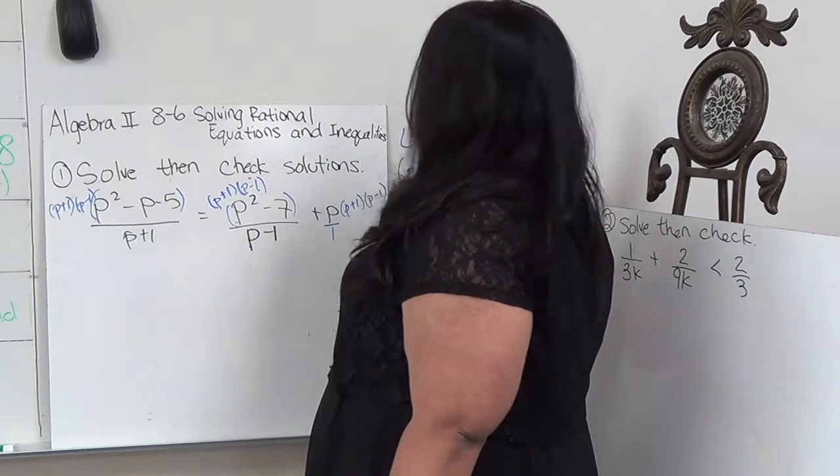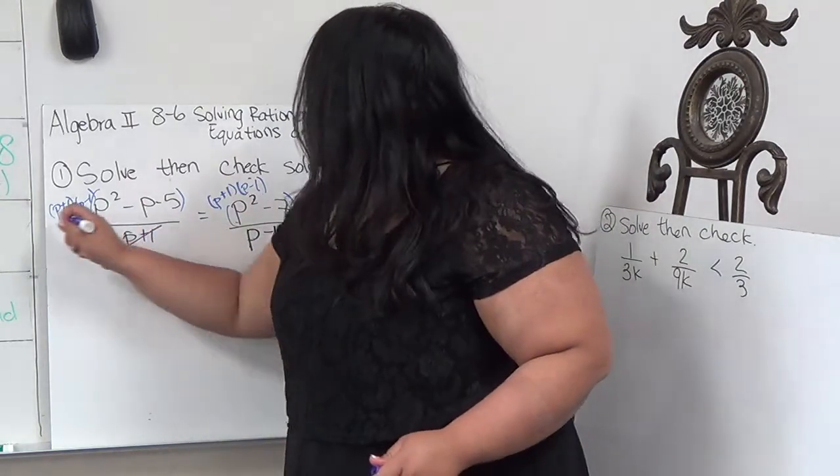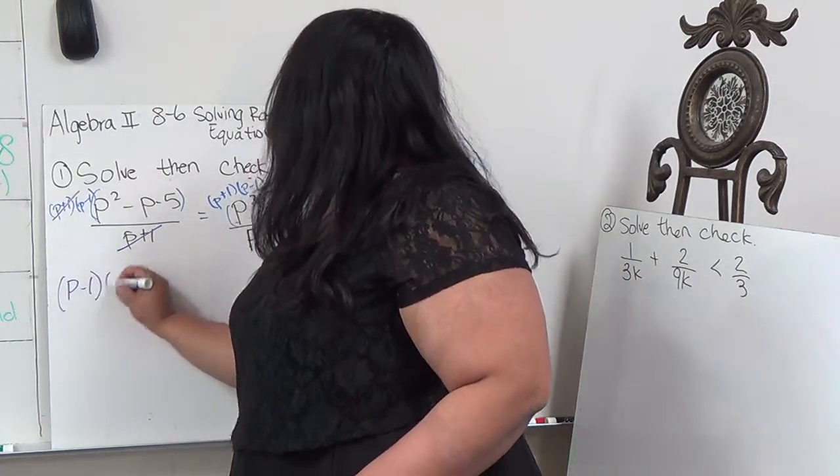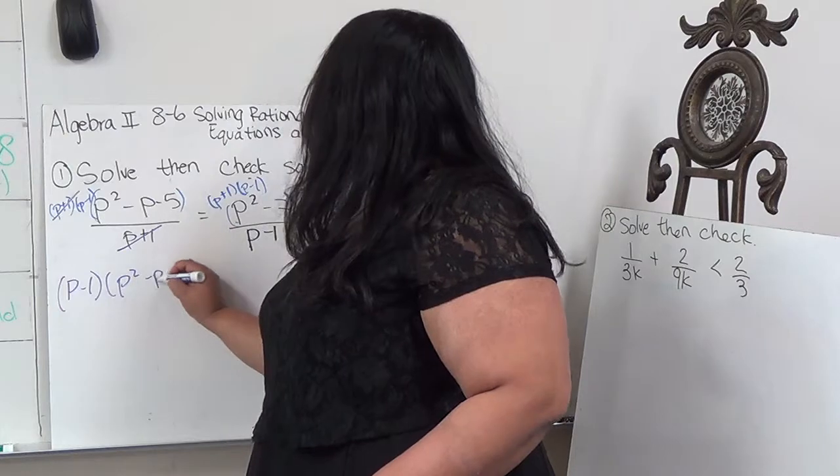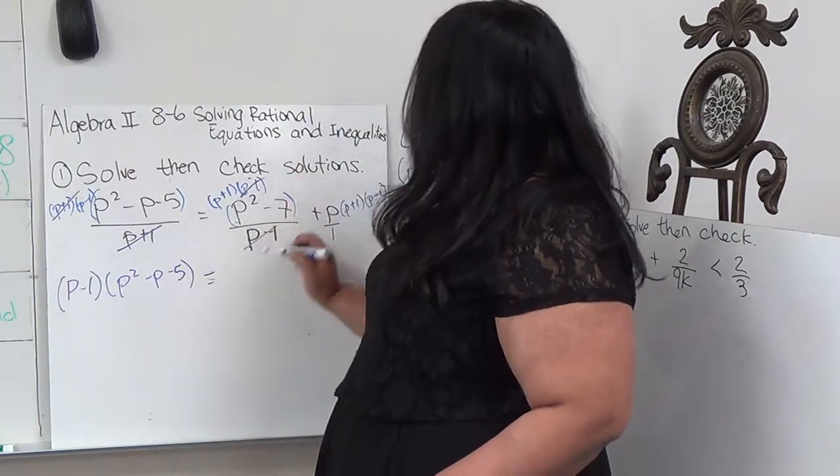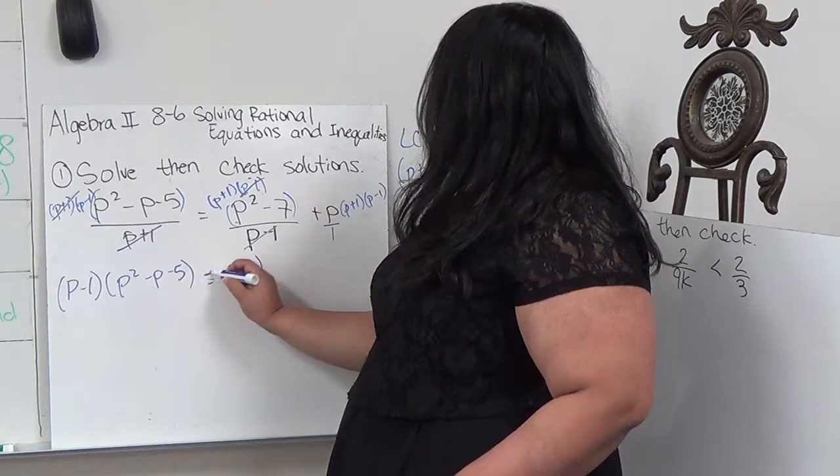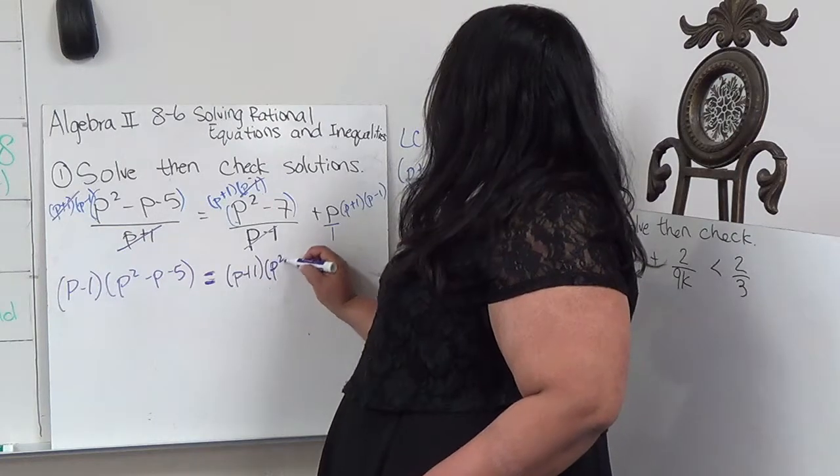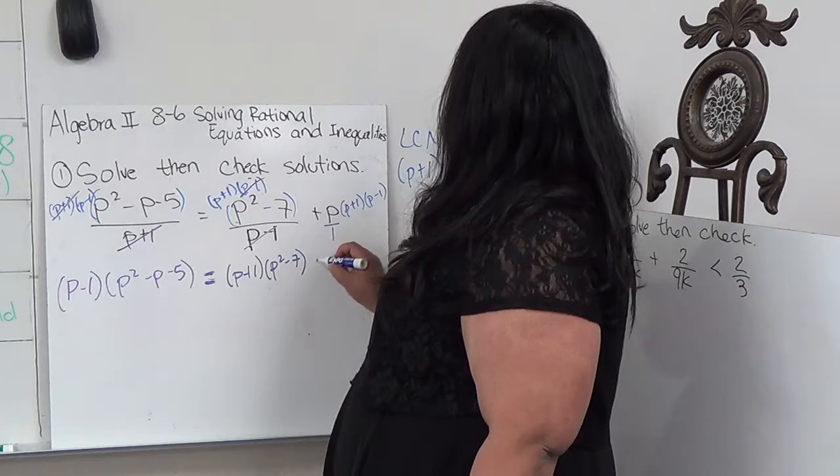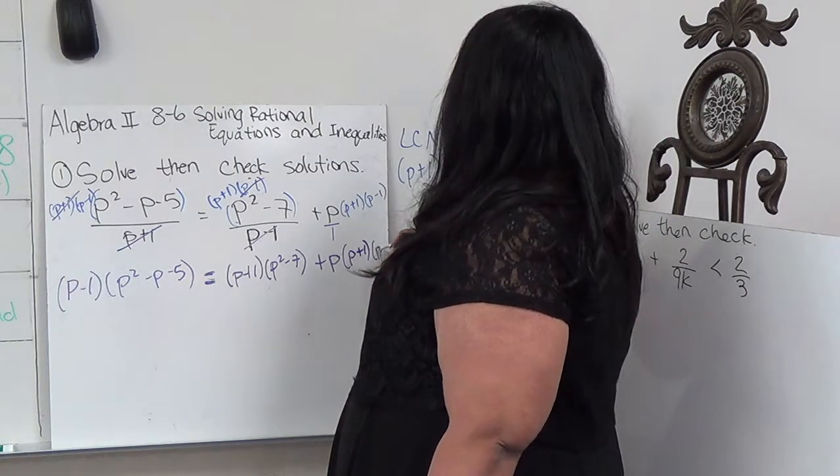So in this case, the (P+1) cancels out, leaving me with (P-1) times (P²-P-5) equals... the (P-1) cancels out, I end up with (P+1), equals (P²-7), and then the last one is plus P(P+1)(P-1).